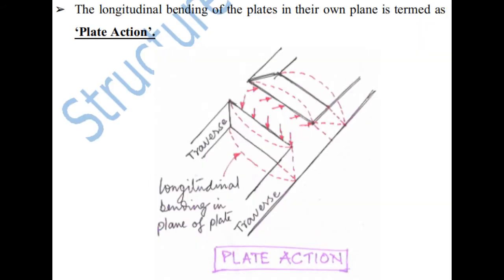Plate action is the longitudinal bending of the plate in their own plane, as shown in the diagram. The takeaway is: plate action is longitudinal bending and slab action is transverse bending — and folded plates resist the load through both.